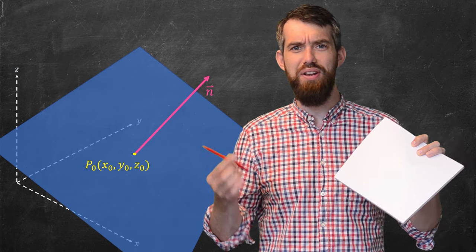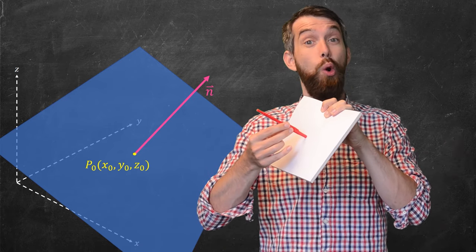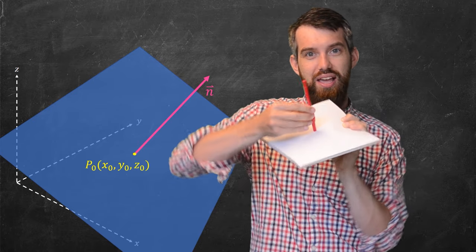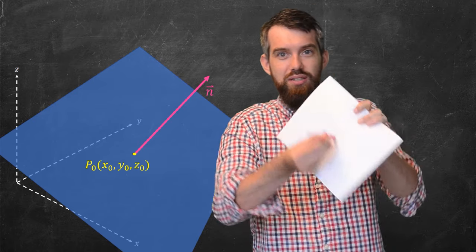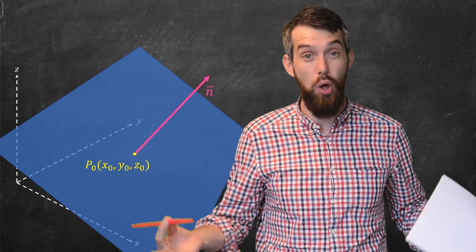I'm going to go really low-tech for a moment. I've got a plane, my piece of paper, and I've got some pen. The pen is the normal vector, so it's sticking straight out at a 90-degree angle. And then, if I have different planes as I twist and tilt it around, the normal vector twists and tilts along with it.